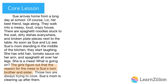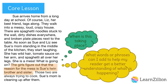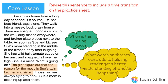The girls figure out that the reason for the mess is Sue's twin brother and sister. When is this taking place? What words or phrases can I add to help my reader get a better understanding of what is happening? Your job is to revise this sentence to include a timed transition on the practice sheet. Pause the video. When you have finished following the instructions, press play again.